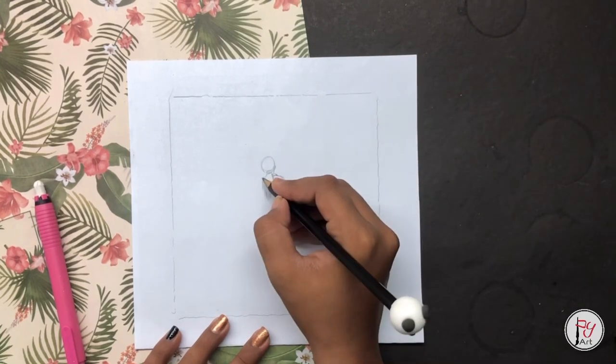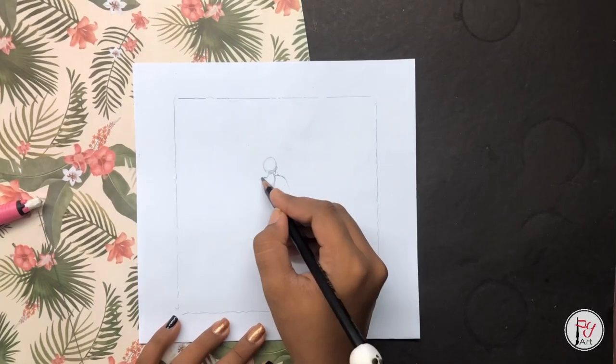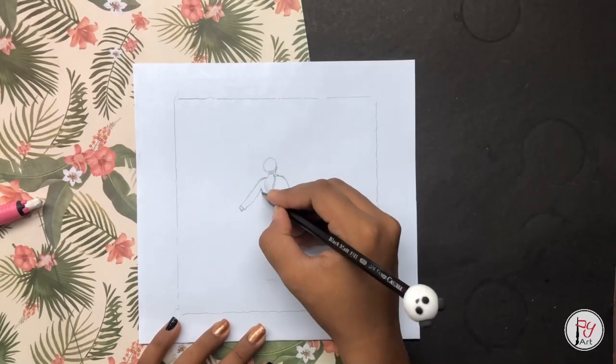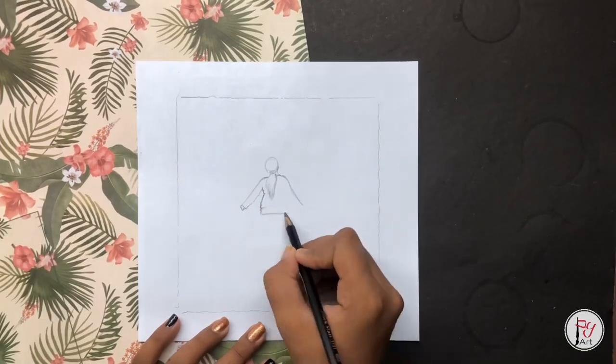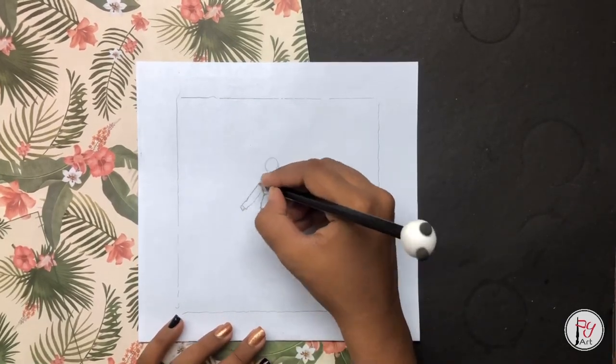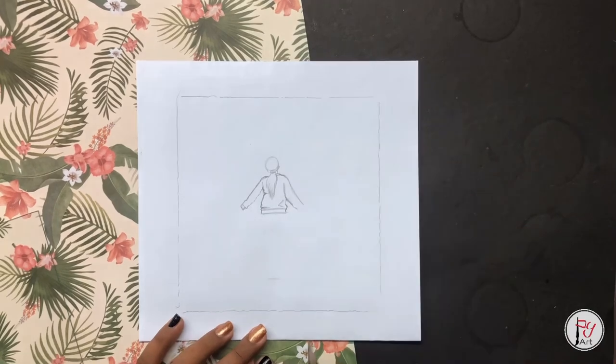Now, we are going to draw Stranger Things Season 4. We are going to draw a fly above it. We are going to recreate that.